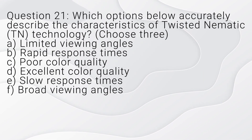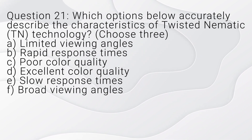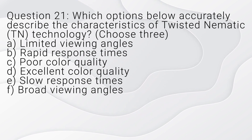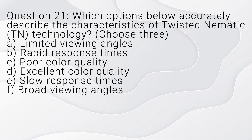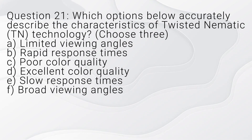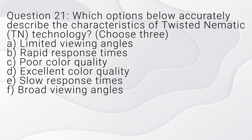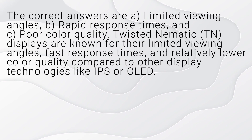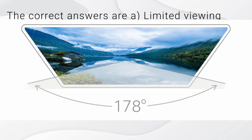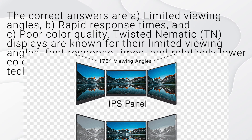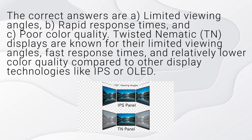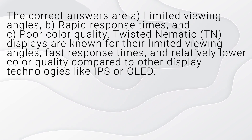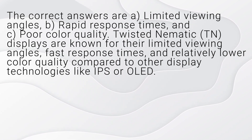Question 21. Which options below accurately describe the characteristics of twisted nematic (TN) technology? Choose three. A. Limited viewing angles. B. Rapid response times. C. Poor color quality. D. Excellent color quality. E. Slow response times. F. Broad viewing angles. The correct answers are A, limited viewing angles; B, rapid response times; and C, poor color quality. TN displays are known for their limited viewing angles, fast response times, and relatively lower color quality compared to other display technologies like IPS or OLED.